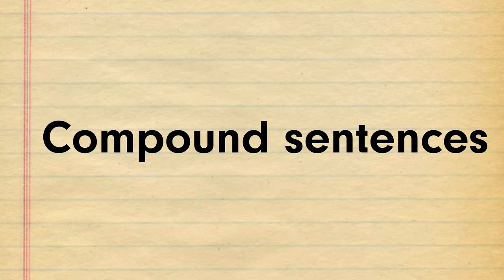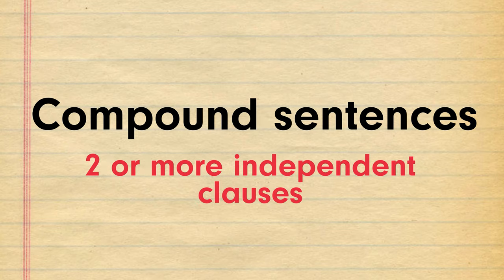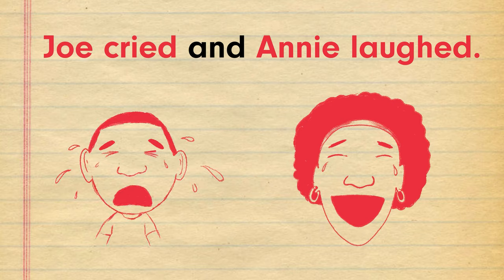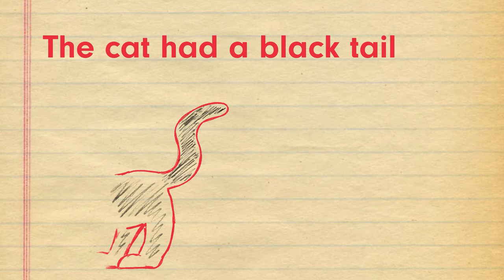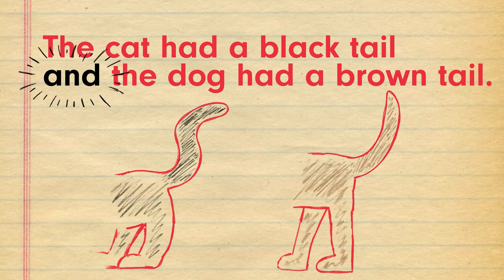Then we have compound sentences. This sentence type is made up of two or more independent clauses, meaning that each part of the sentence needs to make sense on its own. This could appear as 'Joe cried and Annie laughed,' or 'the cat had a black tail and the dog had a brown tail.' Using the connective 'and' shows that these are separate pieces of information, rather than the 'because' we used in the complex sentence to add detail.